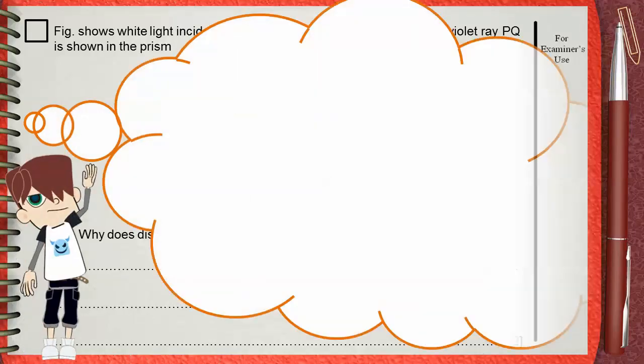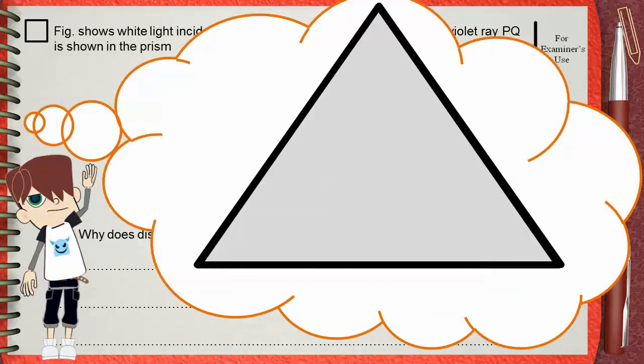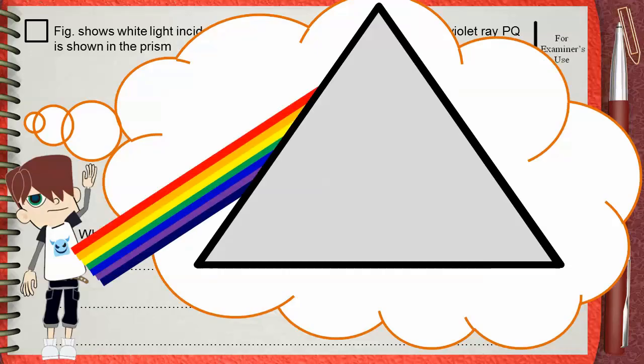This is our prism. White light is not a single color. It's a spectrum of seven ranges of colors, which are red, orange, yellow, green, blue, indigo, and violet. When they travel together in air, they form together the white light.